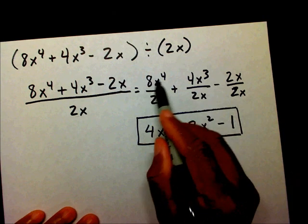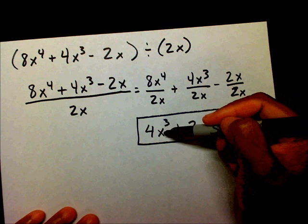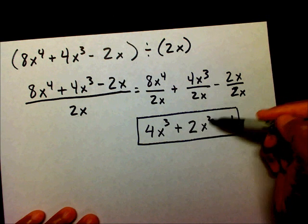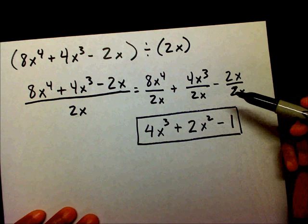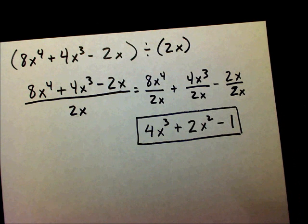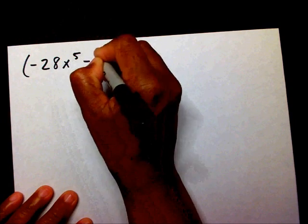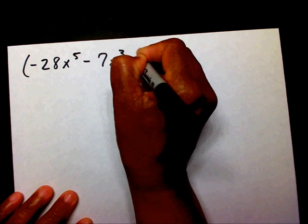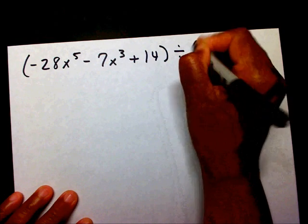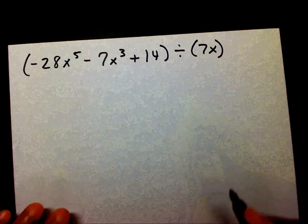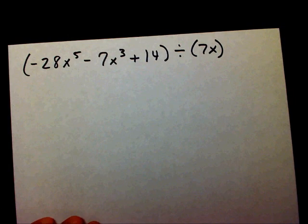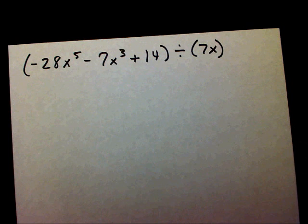If you don't understand how I ended up with x to the 3rd or x squared here, please watch the video on dividing exponents. Now let me let you try one: negative 28x to the 5th minus 7x to the 3rd plus 14 divided by 7x. Please divide this and pause the video.